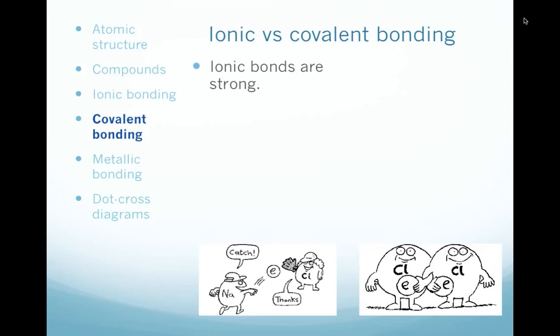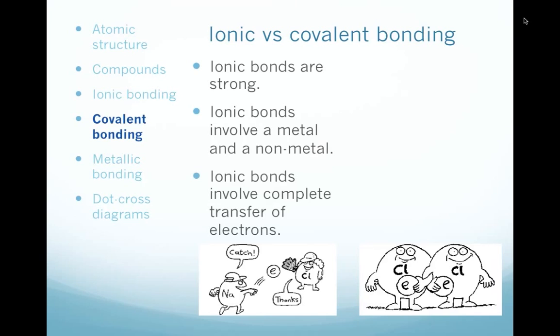Ionic bonds, they're strong bonds between a metal and a non-metal ion, and the ion is formed by the complete transfer of electrons. And as the cartoon shows there, the one element gives away an electron to another element.